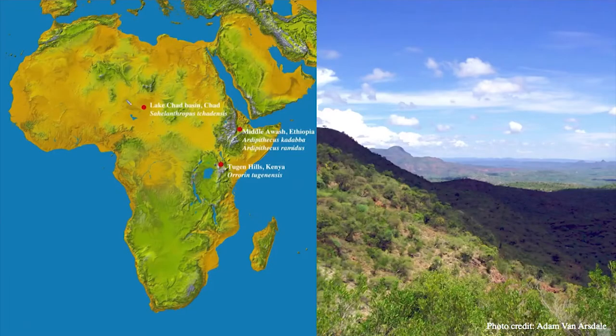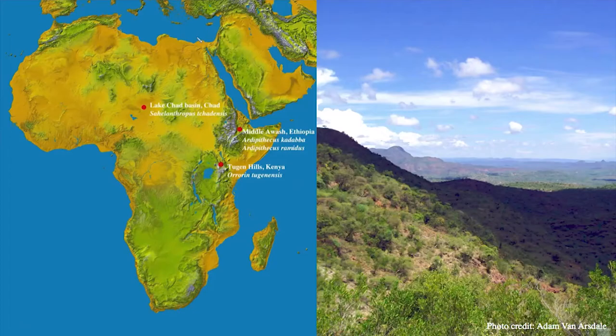Looking at our map, while Lake Chad is situated up here in central Africa, the Tougan Hills are here in the rift valley in Kenya. It's a topographically very variable region today with different seasonality associated with water and rainfall, but an area much more like what we're used to finding early hominids in, especially in East Africa.